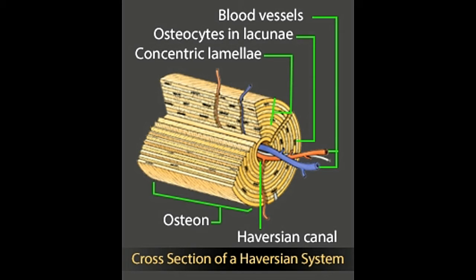The osteoblasts then turn into mature bone cells called osteocytes when new bone is being formed. Osteocytes get embedded within the bone matrix and help maintain the structure of the bone. Osteocytes are cells that help break down bone, after which osteoblasts help in the formation of new bone. This process helps maintain the calcium levels.